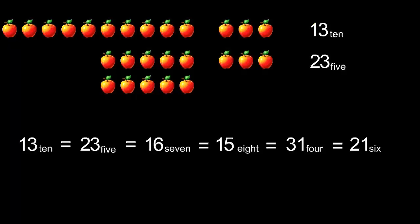It's also sixteen in base seven, because there'll be one group of seven with six left over. In base eight it'll be fifteen — that's one group of eight and five left over. In base four it'll be thirty-one, because there'll be three groups of four and one left over. And another example: base six it'll be twenty-one, that's two groups of six and one left over.